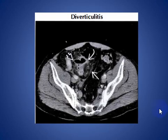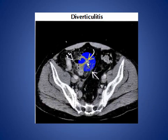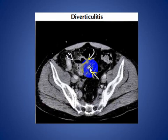Extraluminal production of gas or fluid helps to confirm the diagnosis of diverticulitis. As we see here on axial CT scan, a patient with diverticulitis showing mural thickening of the sigmoid colon and infiltration of the sigmoid mesocolon with gas due to pericolic abscess.